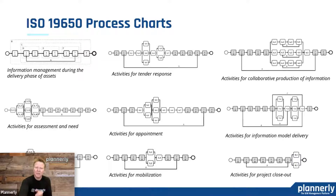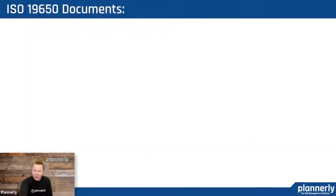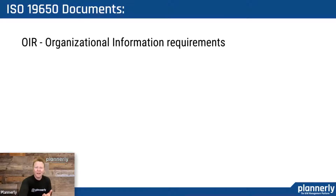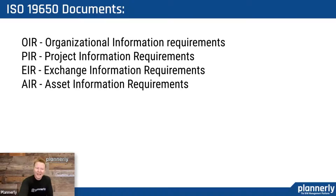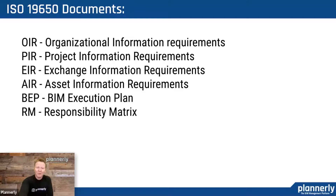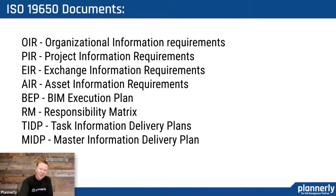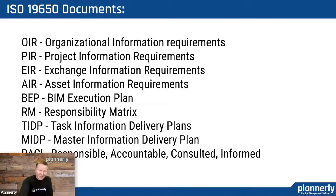There are eight steps unpacked in diagrams with lots of detailed requirements. As a result, there are a lot of documents that might need to be created by different teams at different stages throughout the project. They range from the organizational, the project, the exchange, the asset, execution planning, responsibility matrix, and task and master information delivery plans, RACI charts, and many others. So there are lots of outputs required as a result of these steps in the workflow.